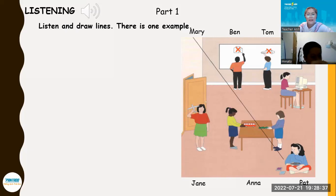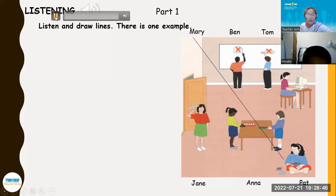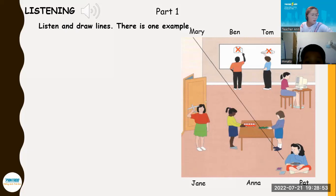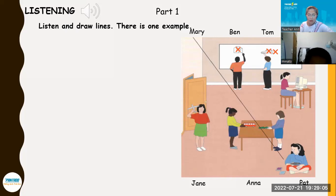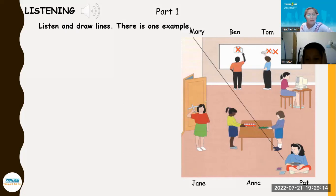Part One. Look at Part One. Look at the picture. Listen and look. There is one example. Hello, is Mary here? Yes, she's listening to a CD. Is she wearing a red skirt? Yes, that's Mary. She loves music. Can you see the line? This is an example. Now you listen and draw lines.